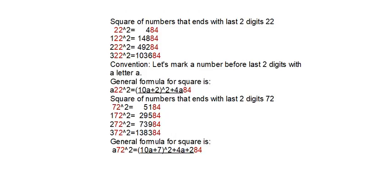These two pairs of numbers all end with last two digits 84. Convention is like in previous video: to mark a number before last two digits with a letter a. The general formula is very similar. Right here is a quadratic equation.